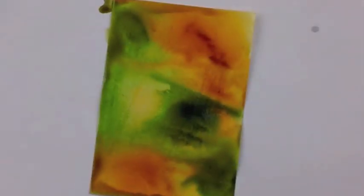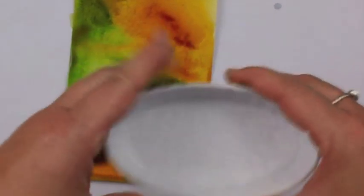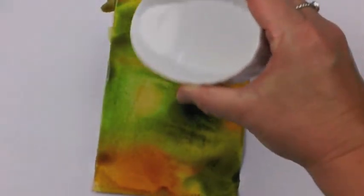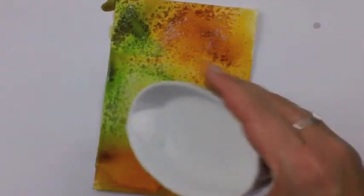Now that I have my colors there, here comes the salt part. What I'm going to do is just take some regular salt. This is just coarse kosher salt, and you can use any variety of salts. The thicker the salt, the more it will absorb. And I'm going to sprinkle it right on top of my pattern.